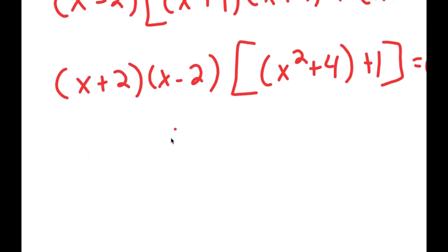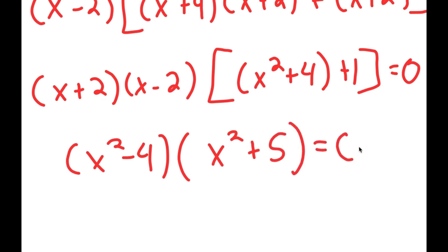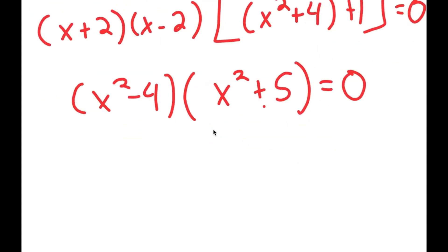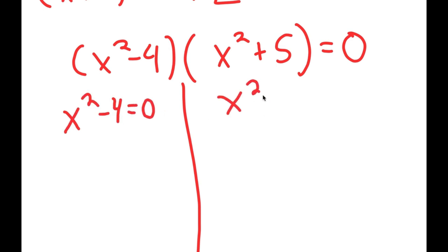So x plus 2 times x minus 2 is x squared minus 4, and I have this times x squared plus 4 plus 1, which is x squared plus 5. This equals 0, which gives me two equations: x squared minus 4 equals 0, and x squared plus 5 equals 0.